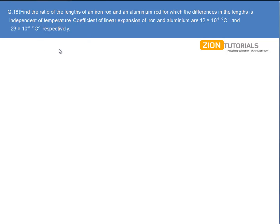I'll calculate the final length of the iron rod as well as the aluminum rod. The final length of aluminum, L'_Al, equals the initial length of aluminum times (1 + α_Al × ΔT), and the final length of iron can be written as initial length of iron times (1 + α_Fe × ΔT).